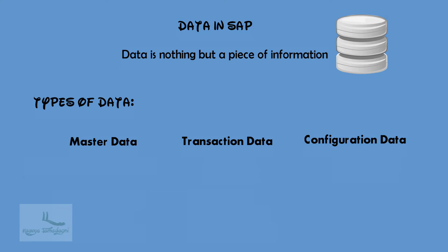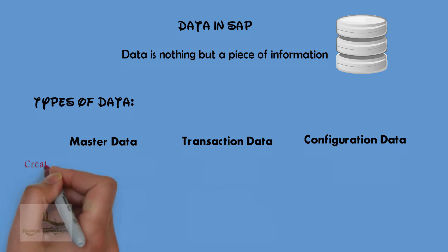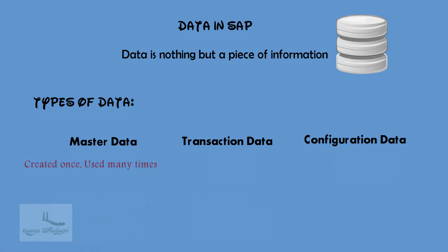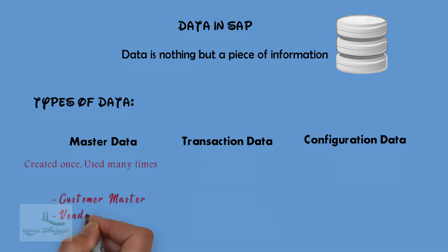First is master data. What does master data mean? Master data is a type of data which is saved at one place but used at many places with zero or minimal changes. For example, customer master data, material master data, vendor master data, etc. These are some of the examples for master data.